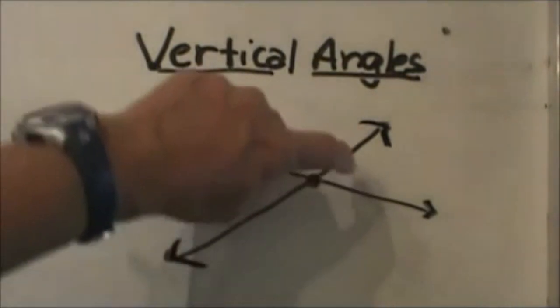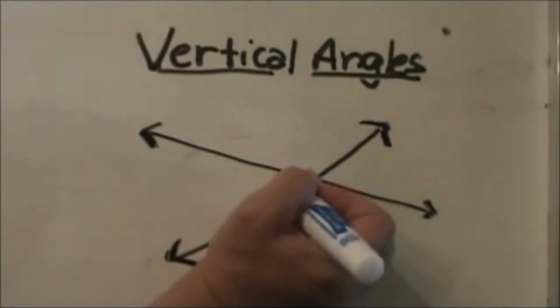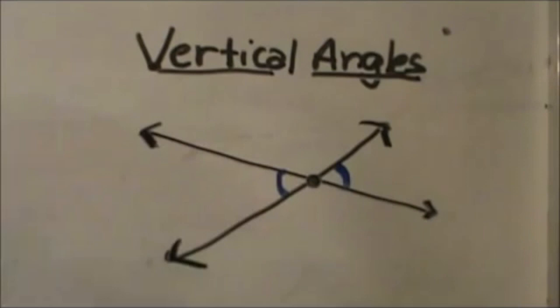If you'll notice these two are smaller and they're actually congruent to each other which means they're equal measures. So I'm going to mark these angles in blue with one little arc showing that they are congruent to each other.